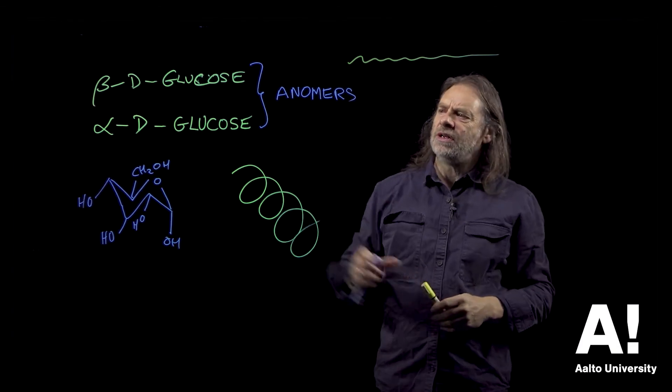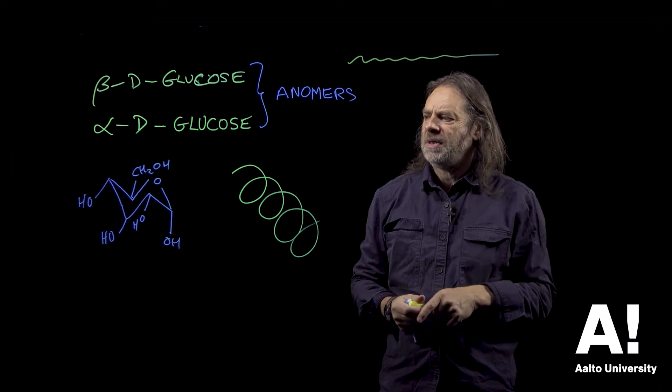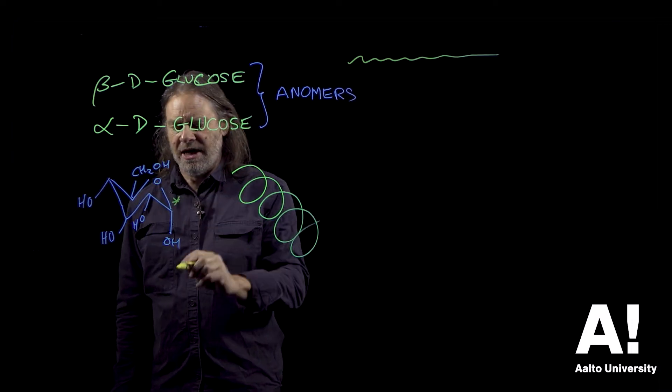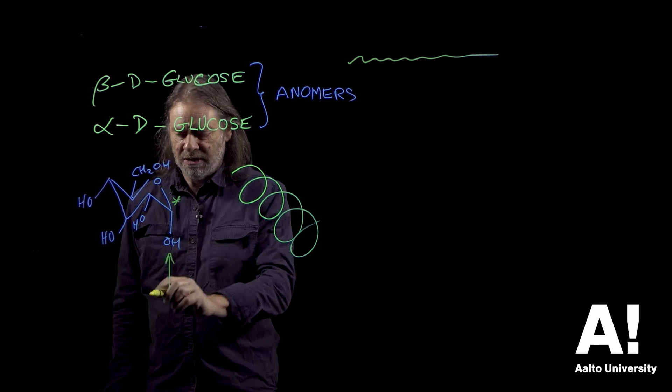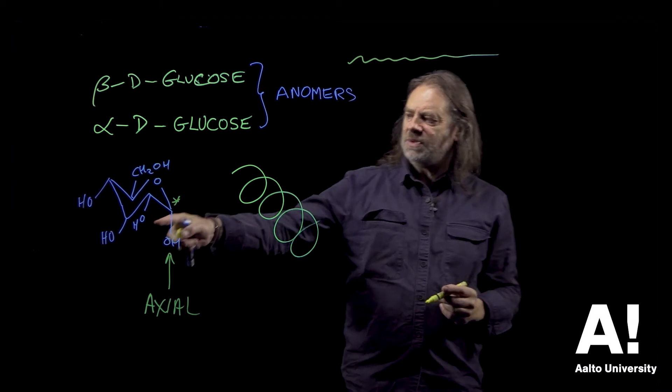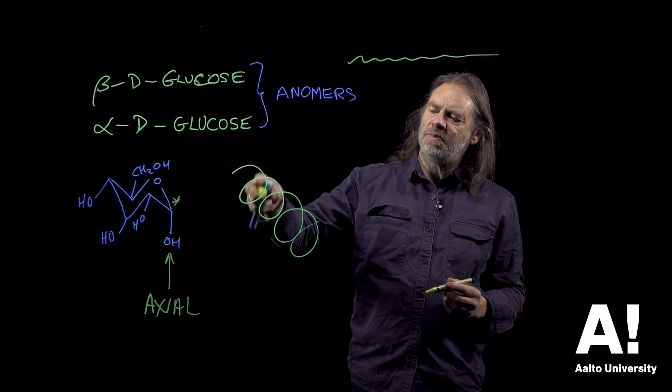I'm now going to say something about alpha-D glucose. These are the two anomers of glucose, alpha-D and beta-D. The alpha-D has an axial hydroxyl at that anomeric carbon position. When these molecules are joined together, you end up with some sort of spiral structure.